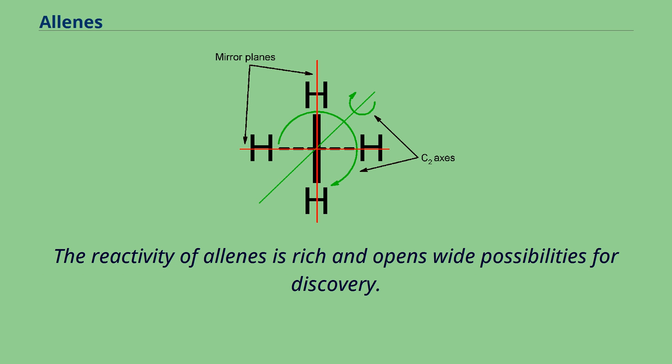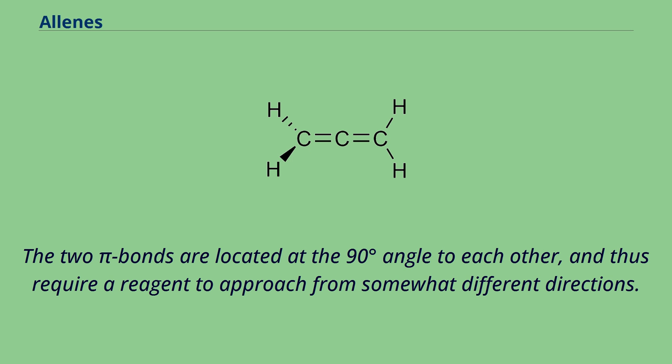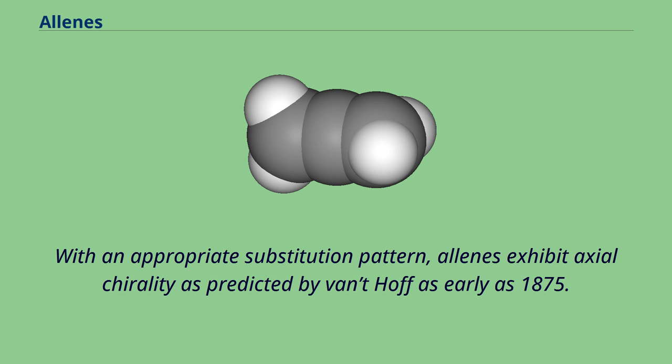The two pi bonds are located at 90 degrees angle to each other, and thus require a reagent to approach from somewhat different directions. With an appropriate substitution pattern, allenes exhibit axial chirality as predicted by van 't Hoff as early as 1875. Such compounds are now extensively investigated.